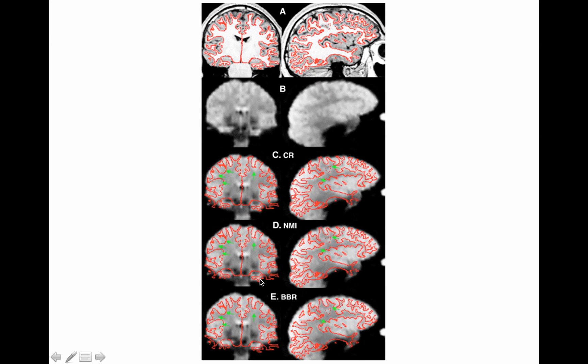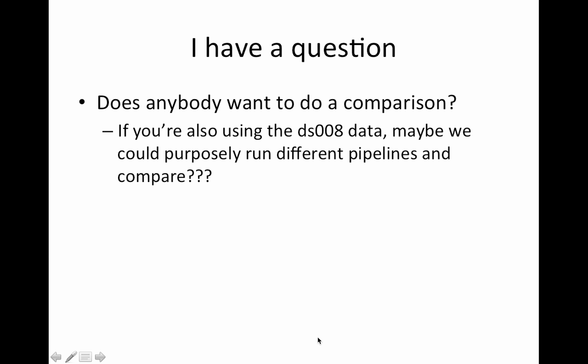When I've run this in the past I've found BBR is better. If somebody else is also using the DSOA data, maybe we could purposely run different pipelines and compare results. I can run correlation ratio — which I think is the default in FSL — you can run BBR, and then email me the final statistics map and we can do a side-by-side comparison. Likewise, if you want to see the difference between FNIRT nonlinear registration and linear registration to the MNI template, we can have somebody do that. Email me or post on the Facebook page and we can set that up.